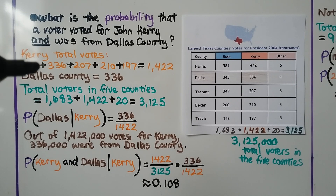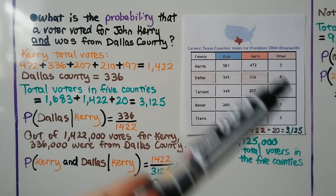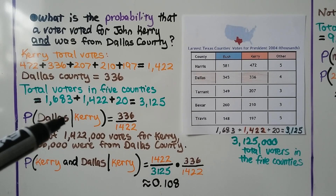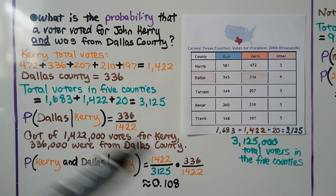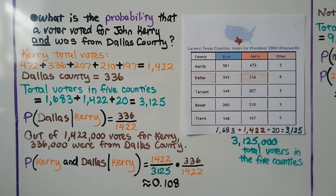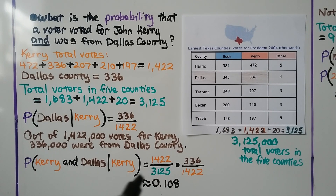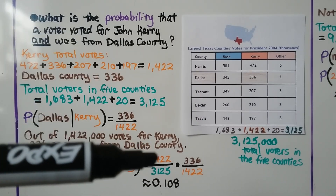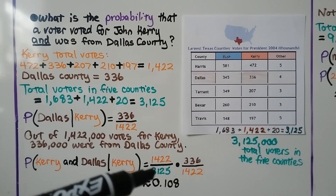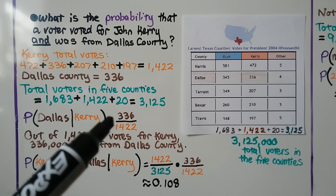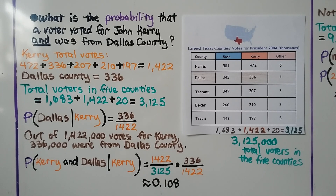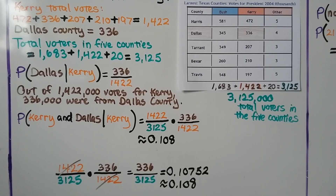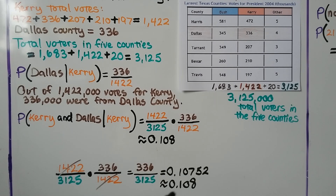Now we have our total Kerry votes, how many were in Dallas County, and the total voters for all five counties. The probability that it was Dallas given that it's Kerry is 336 over 1,422. We express the probability of Kerry and Dallas as the Kerry total, 1,422, over the entire total 3,125, multiplied by 336 over 1,422. The 1,422 cancels out, leaving 336 over 3,125, which rounds to approximately 0.108.